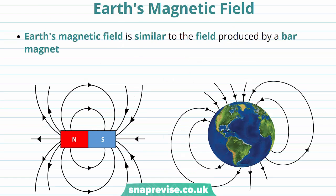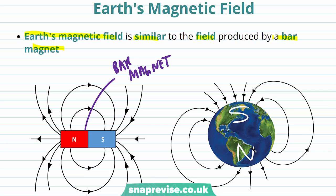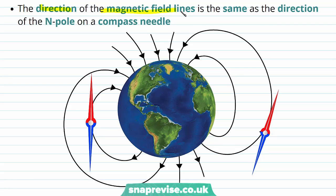Now we're going to discuss the earth's magnetic field. The earth's magnetic field is actually very similar to the field produced by a bar magnet. Earth acts like a bar magnet, but its south pole is at the geographic north and its north pole at the south. This might seem confusing, but remember that a north-seeking pole on a compass needs to be attracted to the south pole of the earth's bar magnet. The direction of the magnetic field lines is the same as the direction of the north pole on a compass needle.